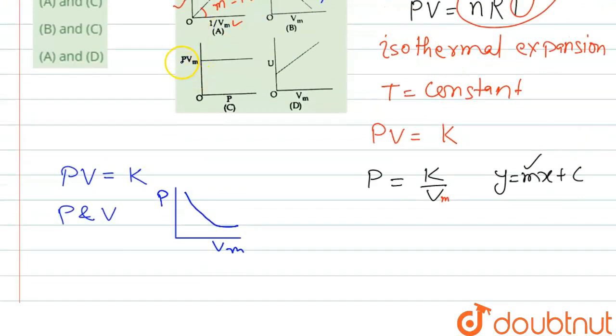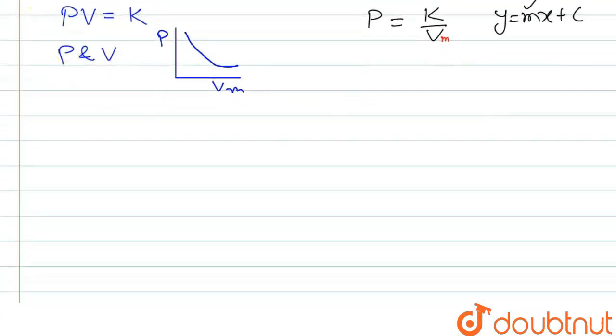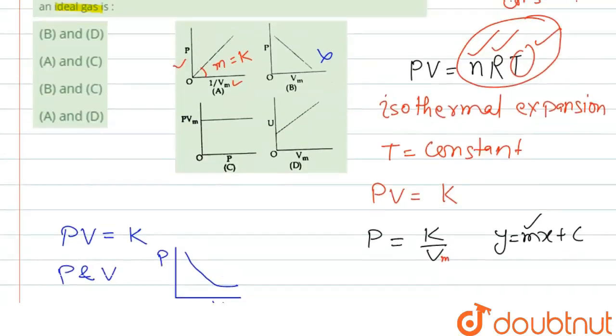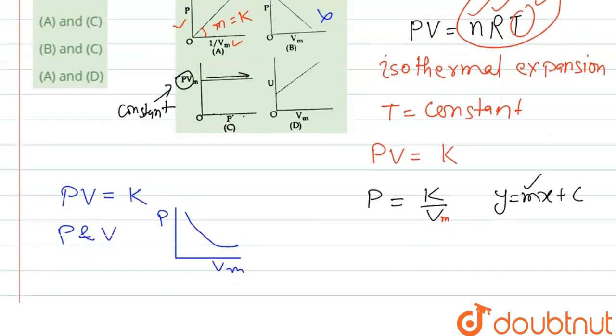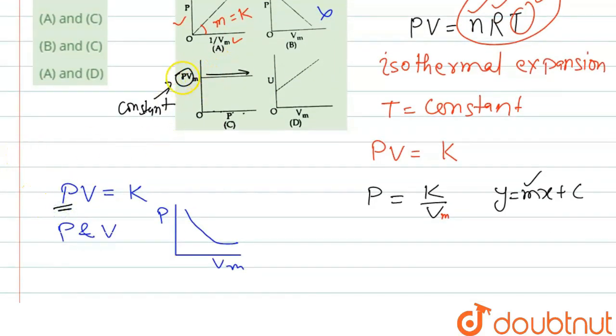Now coming to the third graph, it is PVm on the y-axis and P on the x-axis. So in the third graph we can see that the PV is already a constant, and here the graph is P. So if we are changing the value of P, it will be a straight line because the whole term is constant.